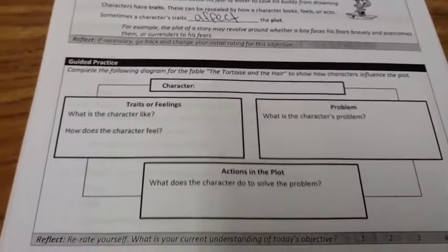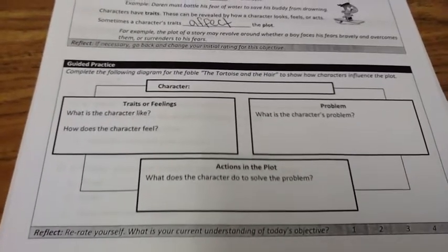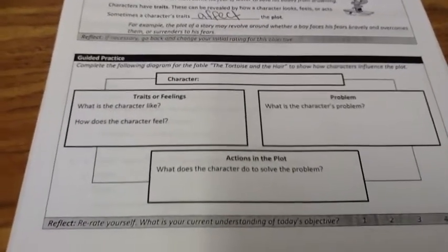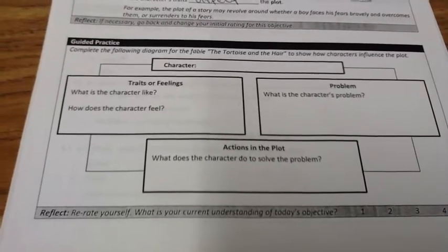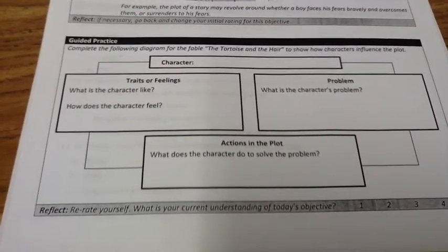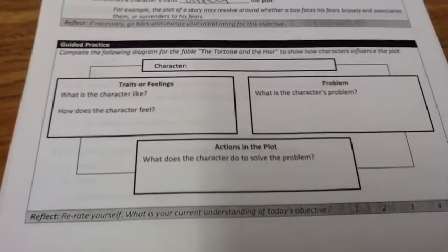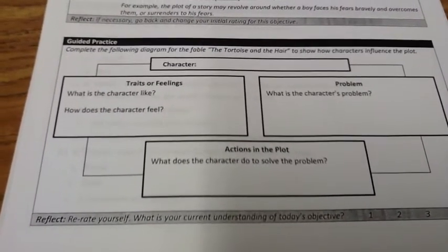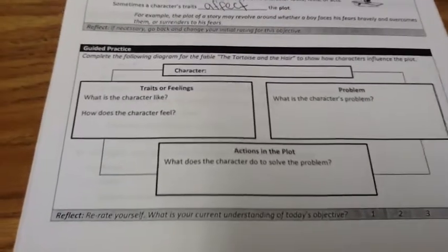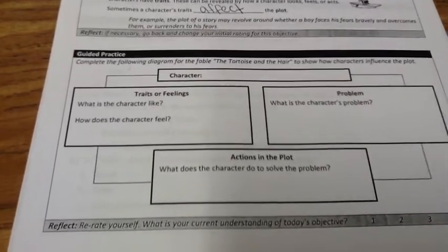Now let's think about this idea of a character influencing the plot again. We're going to create this diagram for the very famous story The Tortoise and the Hare. If you can find the typo on this guided practice and circle it with a star next to it, you will get a bonus point — it was on purpose, let's see if you can figure it out. So in the story, the tortoise challenges the hare to a race, and the hare is very conceited — he's known as the fastest in the land. The hare laughs and says, 'You'll never beat me, this is a joke,' and the tortoise says, 'Okay, let's do it.'